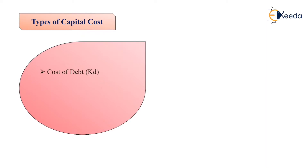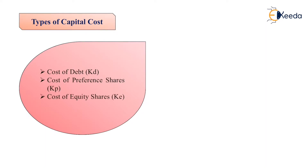There are different types of capital cost. The first is cost of debt, then we have cost of preference shares, cost of equity shares, and cost of retained earnings. These are the types of capital cost.